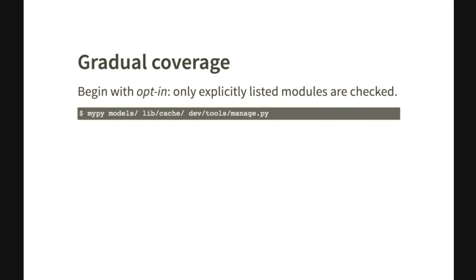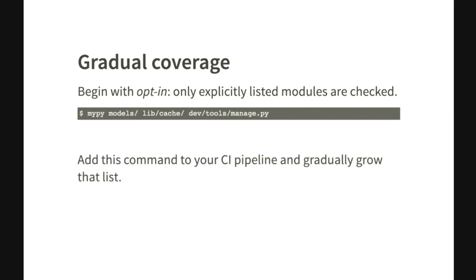Since covering an existing large code base is a huge amount of work, you want to go step by step. You begin by opting in — meaning you run MyPy only on the modules you've already covered. You might even start with a single module, and then just keep adding on. You want to defend your progress by adding this check into your CI pipeline so it runs before your tests do, and you never want to make that list smaller, only ever expand it.